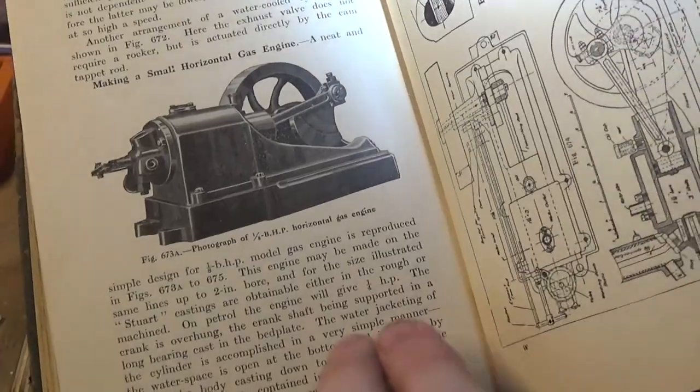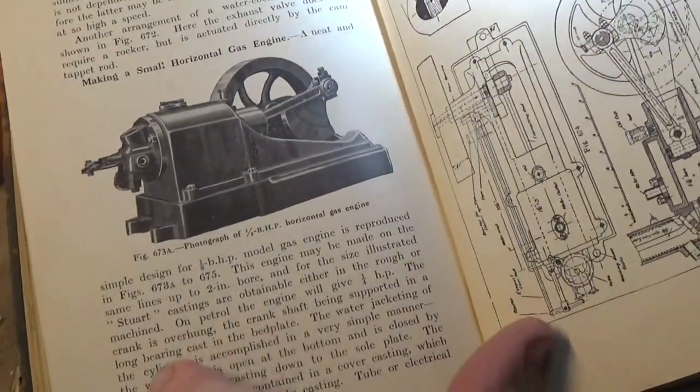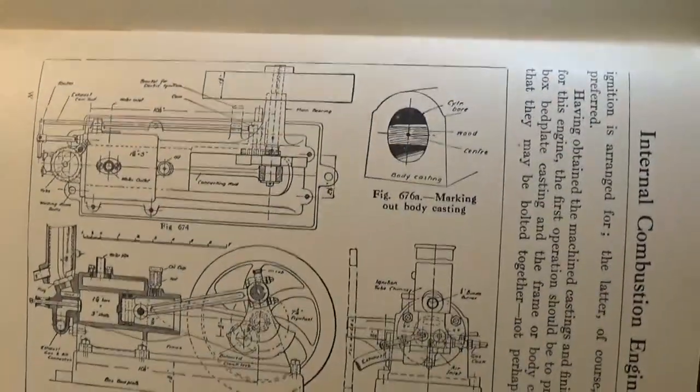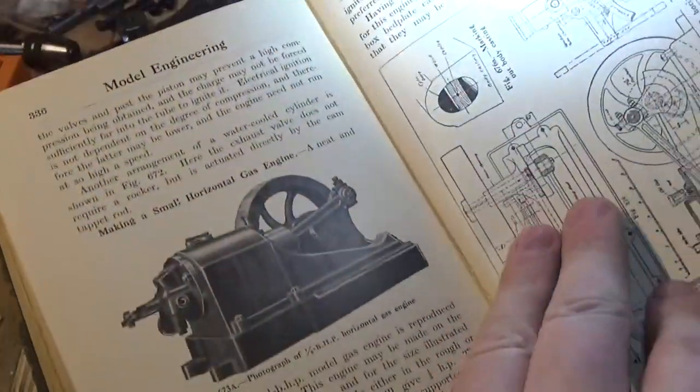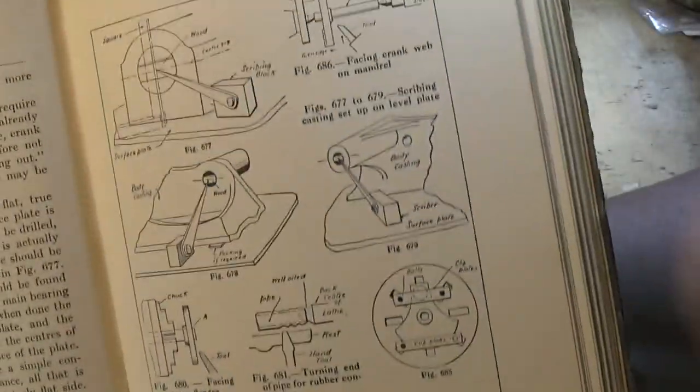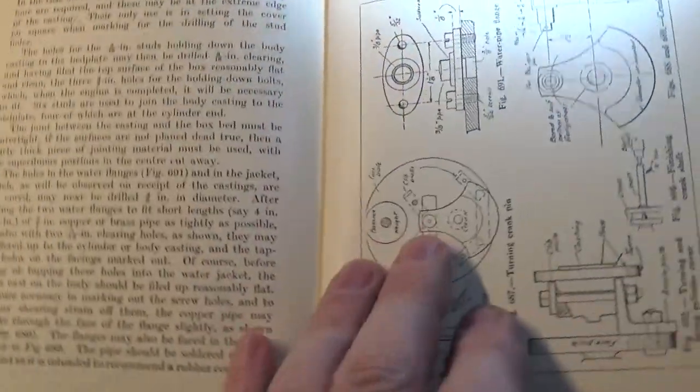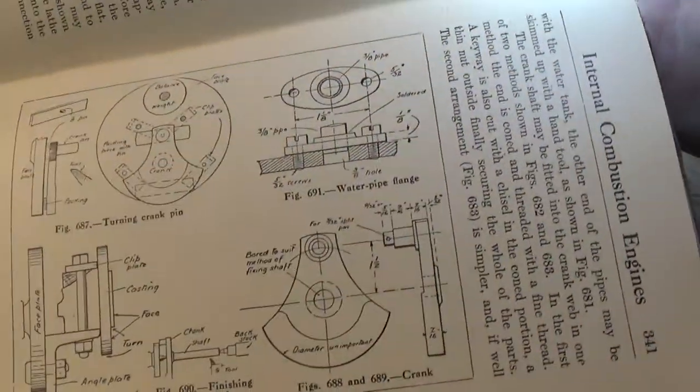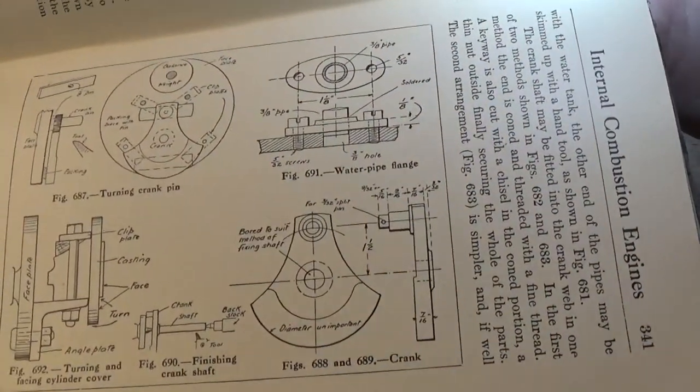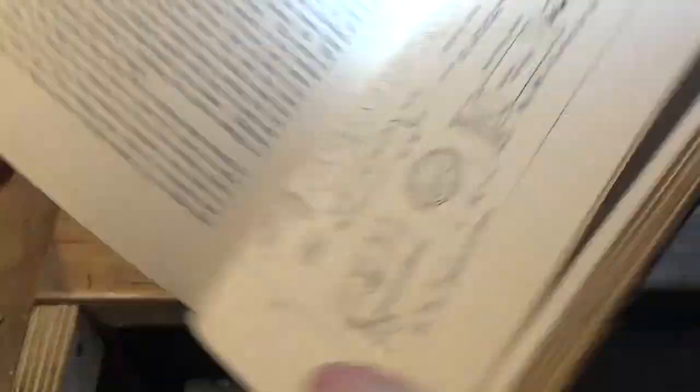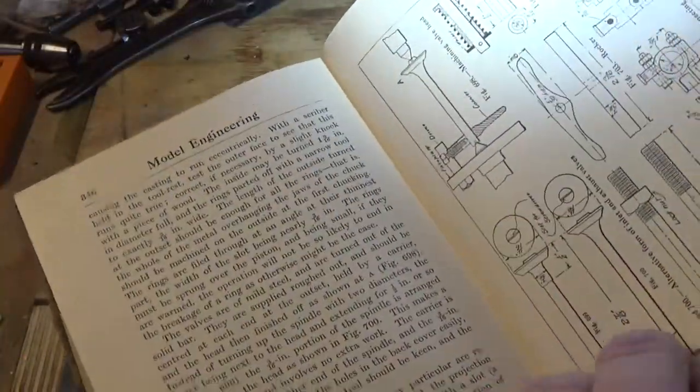The crank is overhung, the crankshaft being supported by a long bearing cast in the bed plate. There's the drawings. About eight inch flywheel and about two inch bore. There's instructions on laying out the casting for machining, turning and facing the cylinder cover and machining the crank, instructions on the cylinder head. It's about 20 pages.